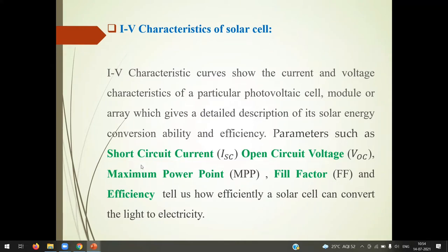Parameters such as short circuit current ISC, open circuit voltage VOC, maximum power point, fill factor FF, and efficiency. These factors tell us how efficiently solar cell can convert light into electricity.